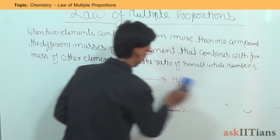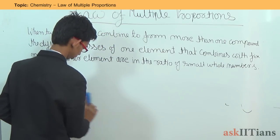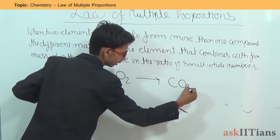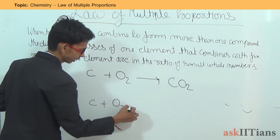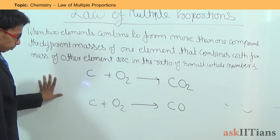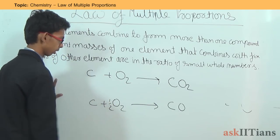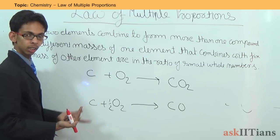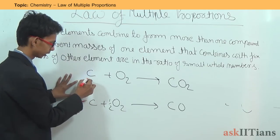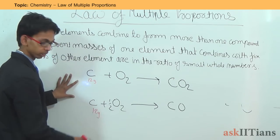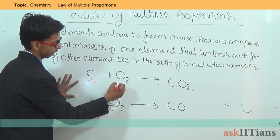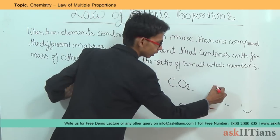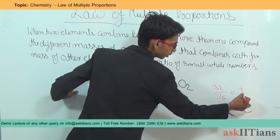Let's take another example with carbon. Carbon reacts with oxygen to form carbon dioxide (CO₂), and the same elements combine to form carbon monoxide (CO). In both reactions, there is one atom of carbon, so the mass of carbon is 12 grams in both cases. The difference is in the mass of oxygen: 32 grams in carbon dioxide and 16 grams in carbon monoxide. The ratio is 32 to 16, which is 2 to 1 — a whole number ratio.